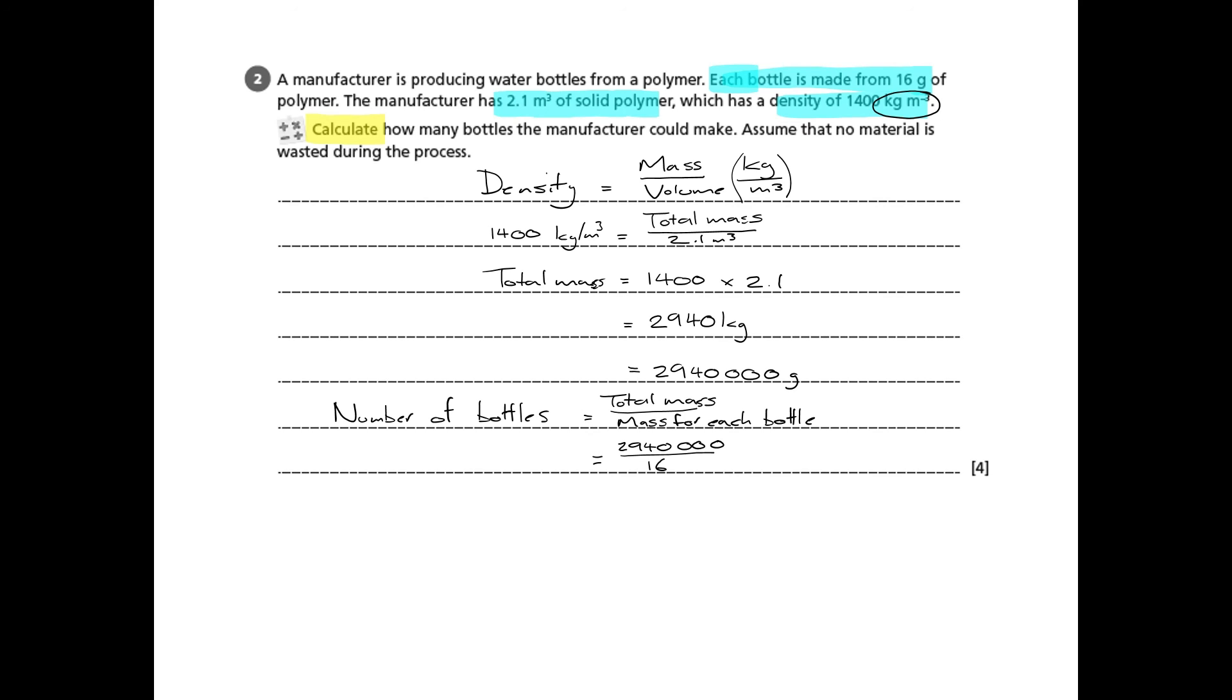That's just shy of 3 million divided by 16. It's going to be quite a large number that comes out when you plug this into the calculator. When you do, you're going to get 183,750 bottles can be made from that 2.1 meters cubed of polymer.